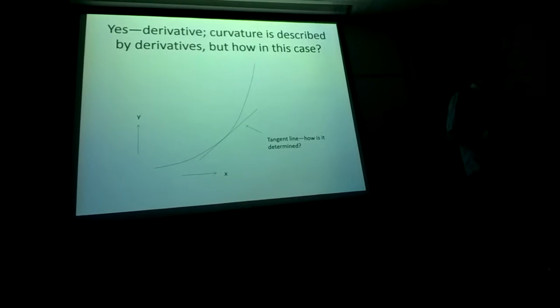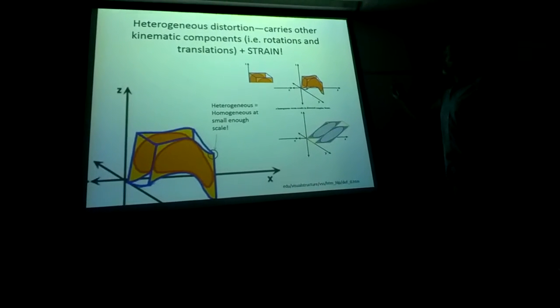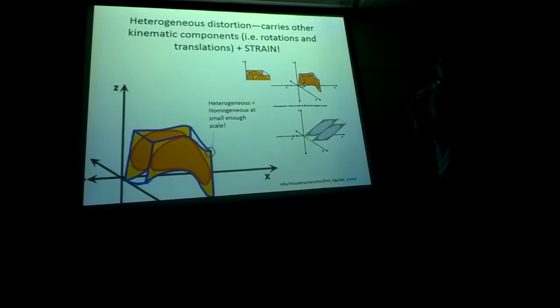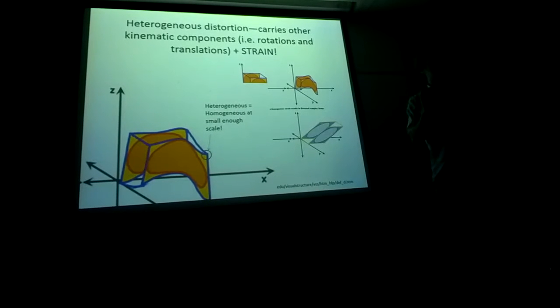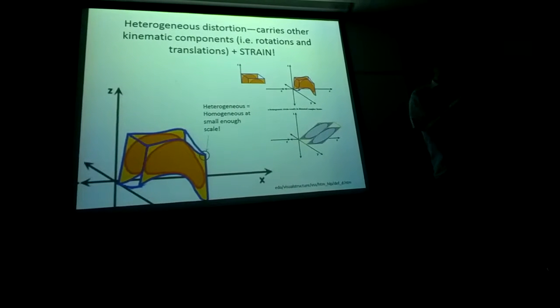I already said that, so we can go from there. So heterogeneous distortion is related to the quantity we call strain by a derivative relationship. That thing I just did was an illustration of that.